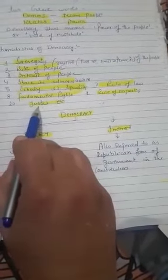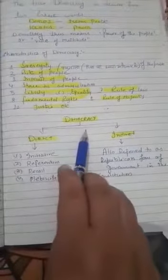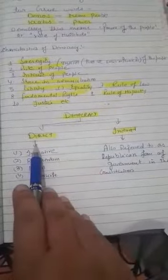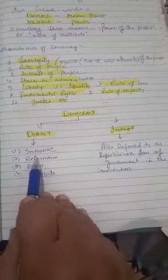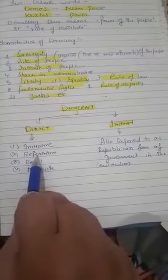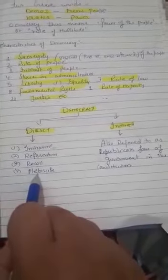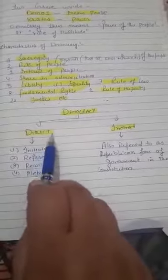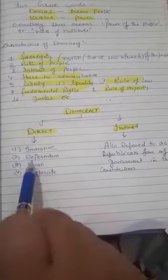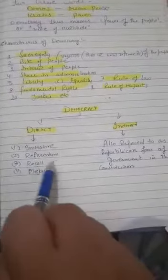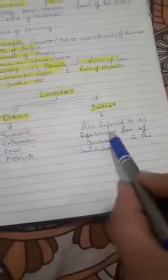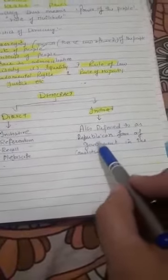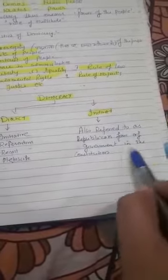Democracy can be divided into two parts: direct democracy and indirect democracy. Direct democracy can be considered in four parts: initiative, referendum, recall, and plebiscite. Indirect democracy is also referred to as the republican form of government in the constitution.